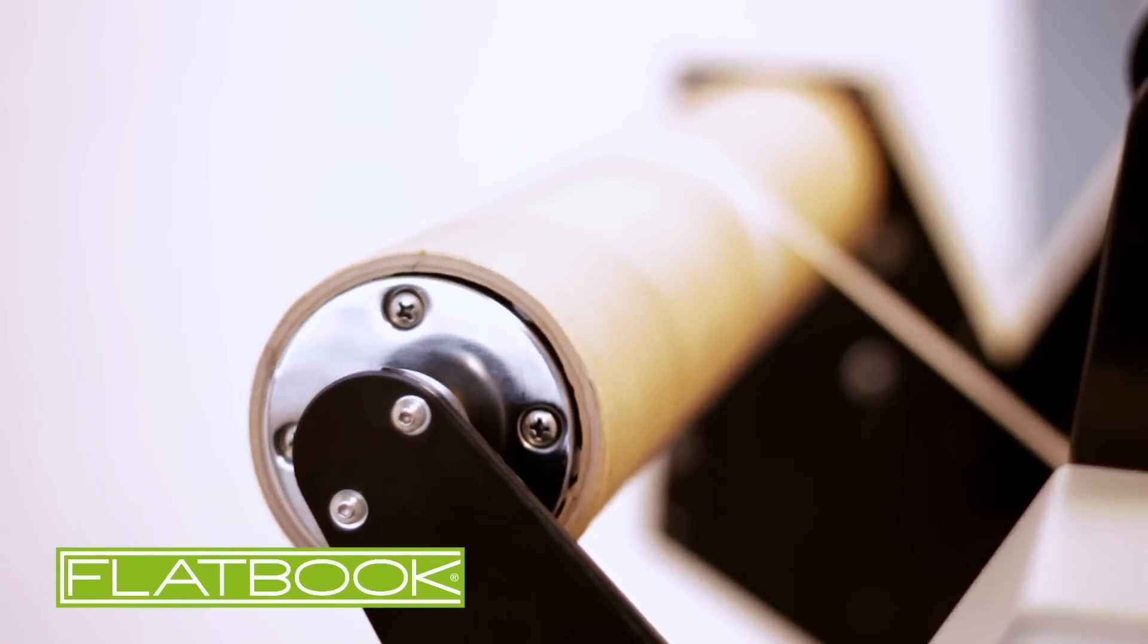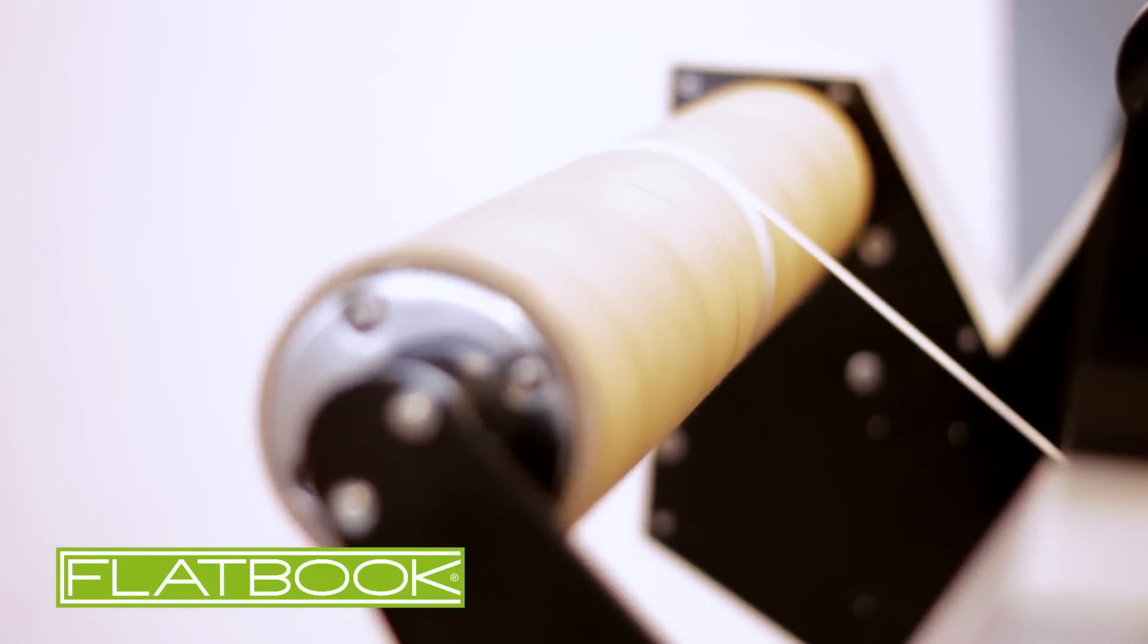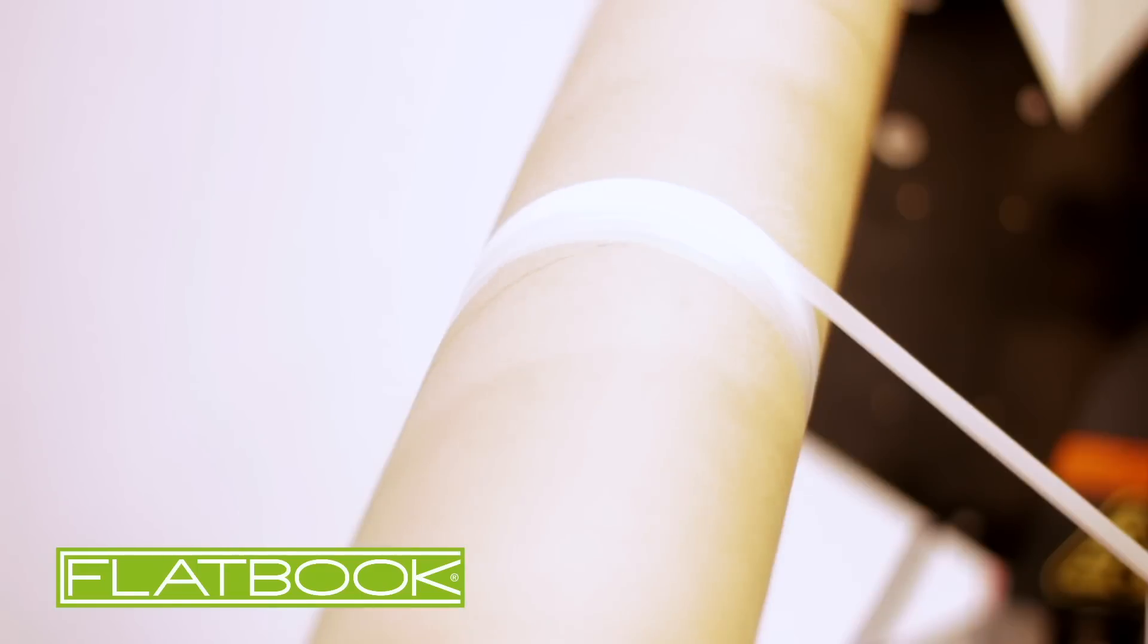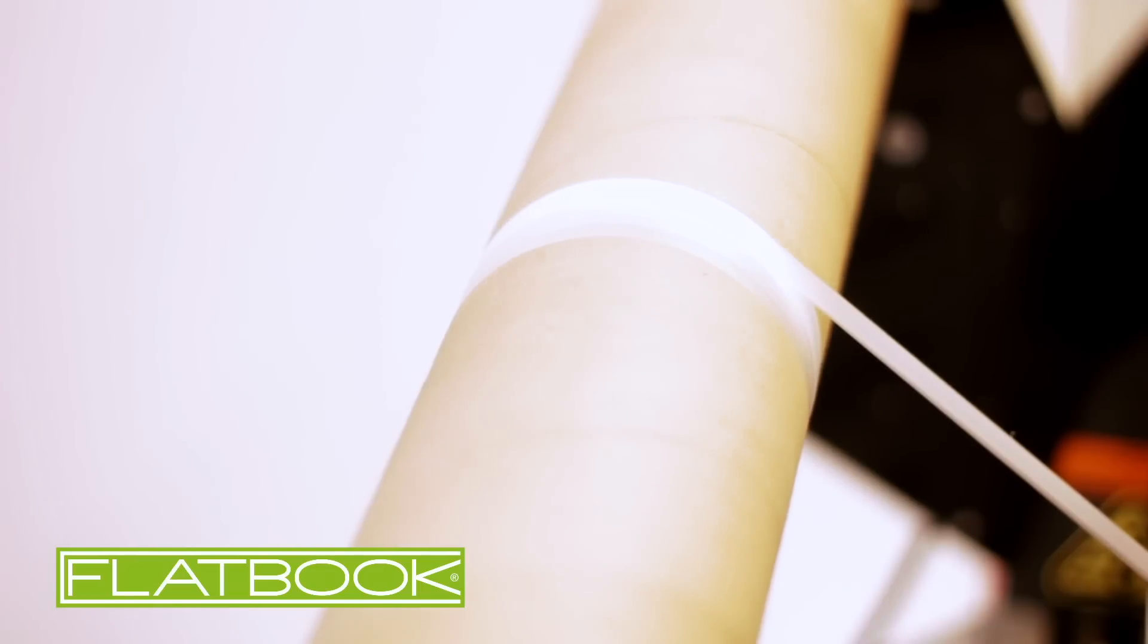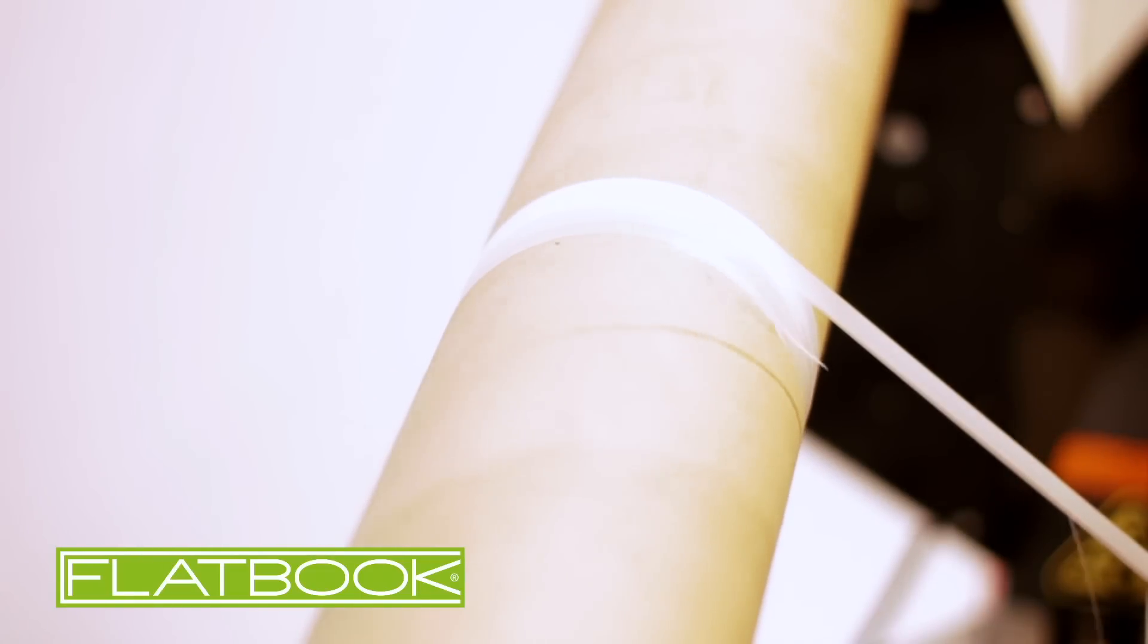An optional take-up unit can also be used in conjunction with the Flatbook that sits at the rear of the Matrix. It works in synchronisation alongside the Flatbook and neatly collects any spare film.